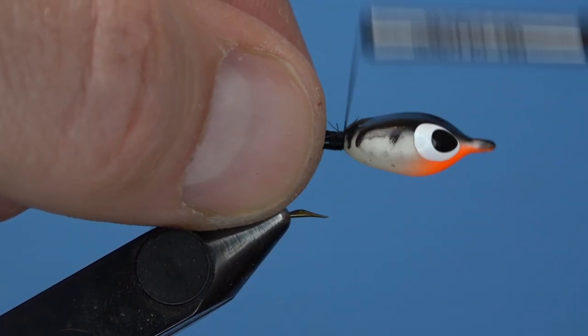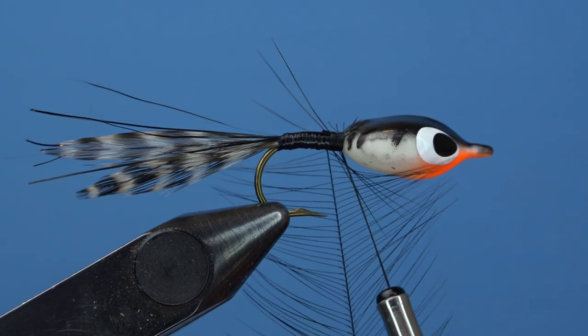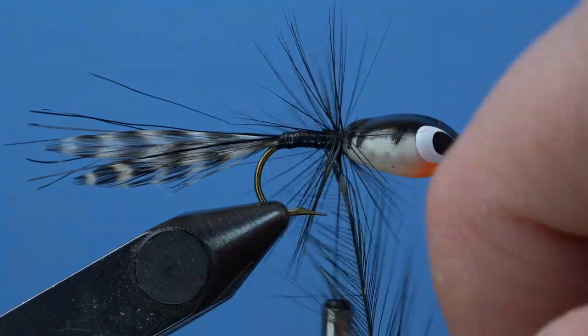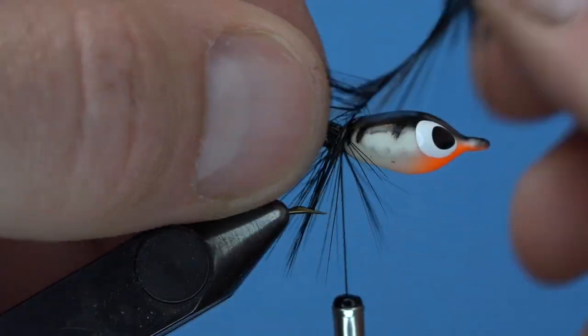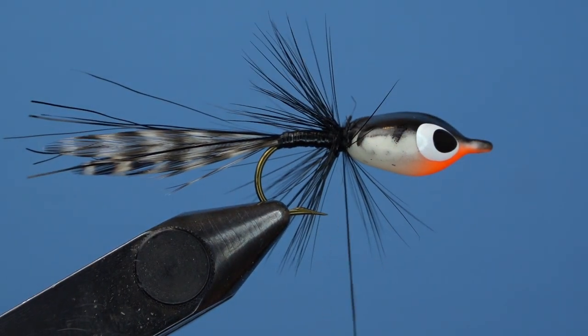I don't mind bluegill flies being a bit messy and buggy, so four or five turns of this hackle should work really well. But you can make it as buggy as you want. Just make sure to preen those hackle fibers back with your thumb and your pointer finger while you're palmering it around the hook shank.